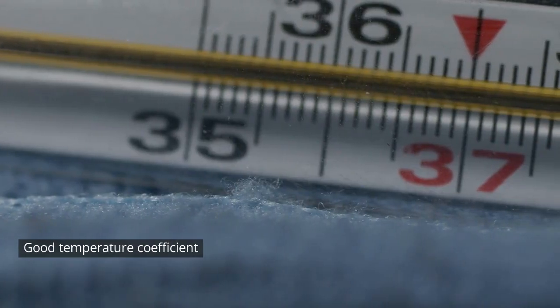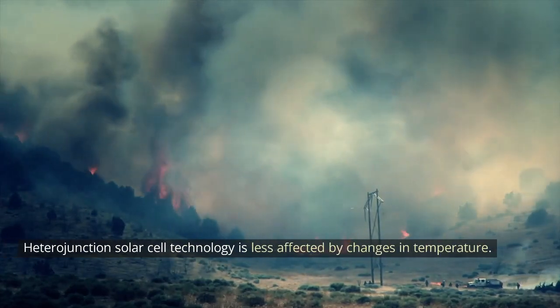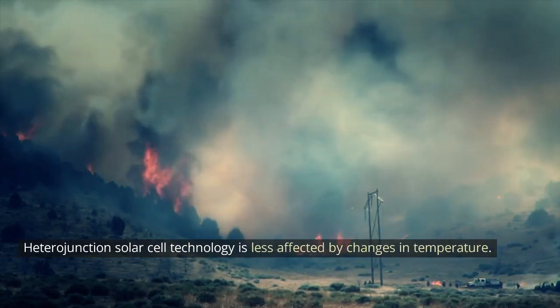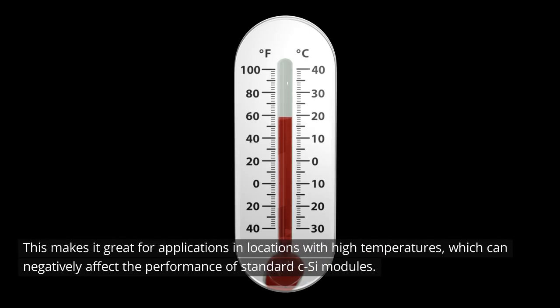Good temperature coefficient. Heterojunction solar cell technology is less affected by changes in temperature. This makes it great for applications in locations with high temperatures, which can negatively affect the performance of standard c-Si modules.